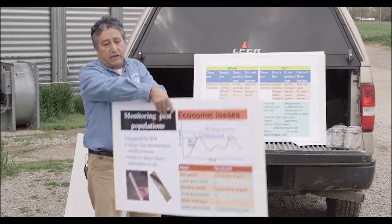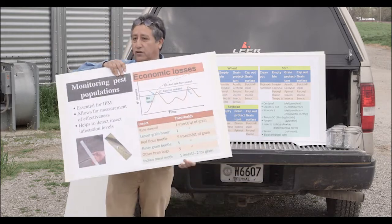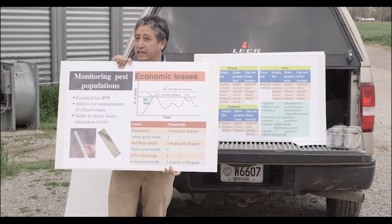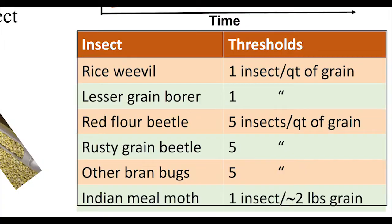These are the common thresholds for insects. For some insects they are really high, and for others — for example, the rice weevil — they are very, very low. That's very important to understand.